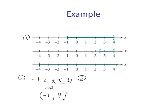Number two: numbers in between two and a half to four. It can equal two and a half, and it can equal four. So we say two and a half ≤ X ≤ four, putting equal signs for both inequality symbols. In interval notation, we write [2.5, 4] — bracket, two and a half, comma, four, bracket.